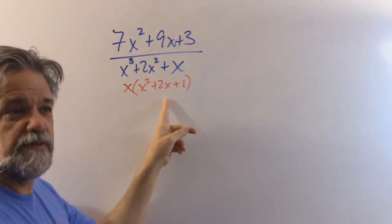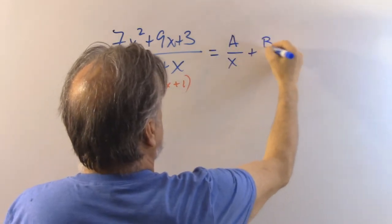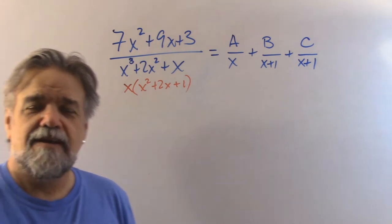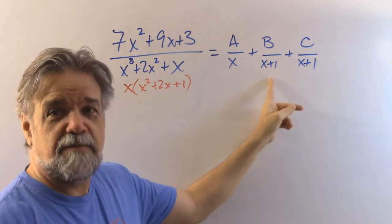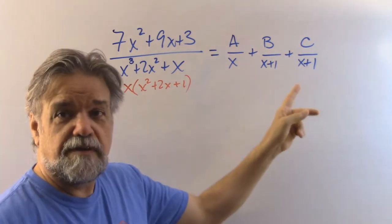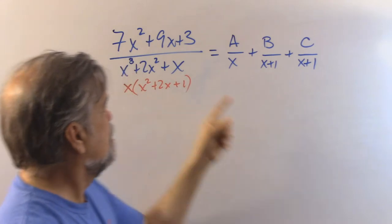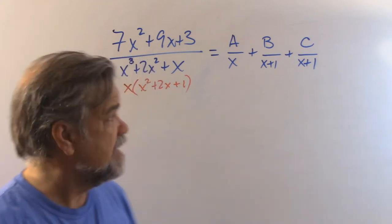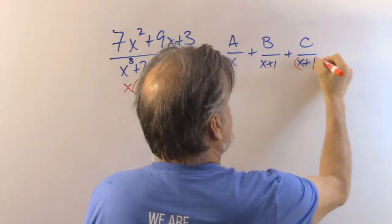I know what that is — that's x plus 1 squared. So this is going to be something over x plus something over x plus 1 plus something over x plus 1 again. Except this doesn't work, because those two already have common denominators. I can just put those together and combine b plus c to be one variable, but that won't give us the full denominator. So you have to say a over x plus b over x plus 1 plus c over x plus 1 squared.